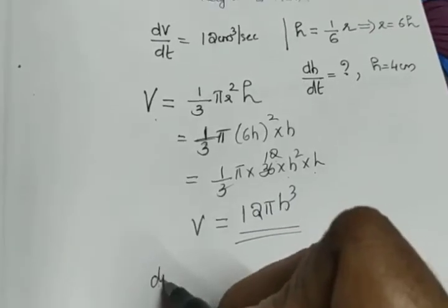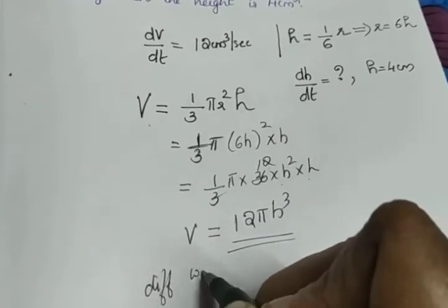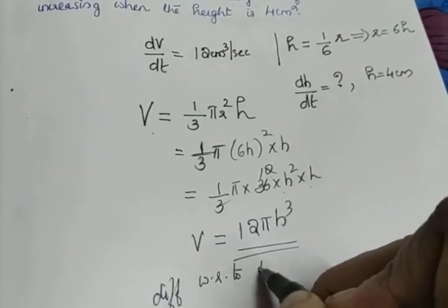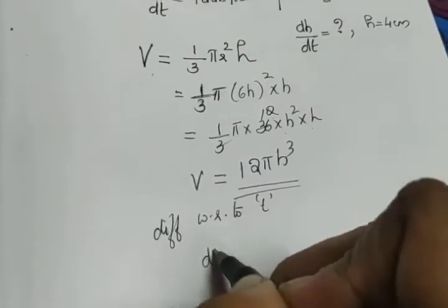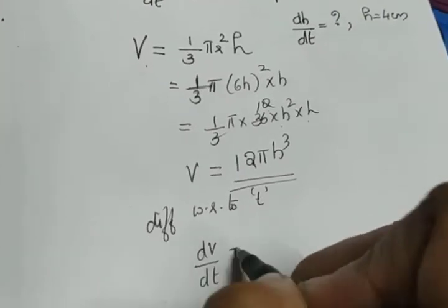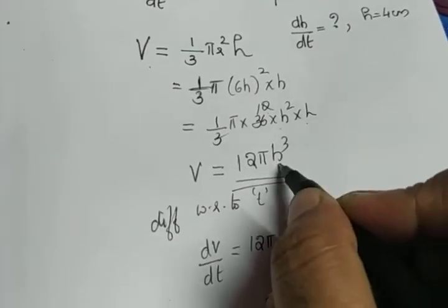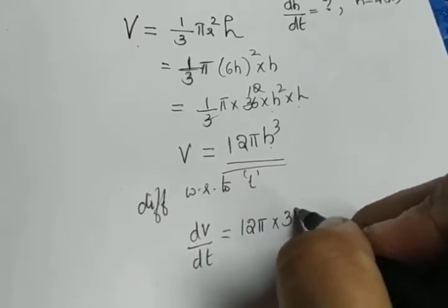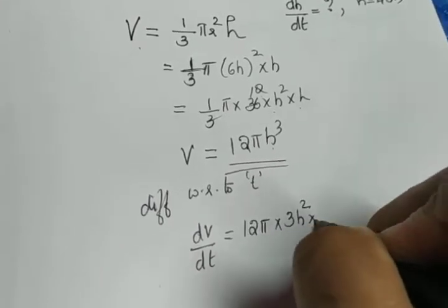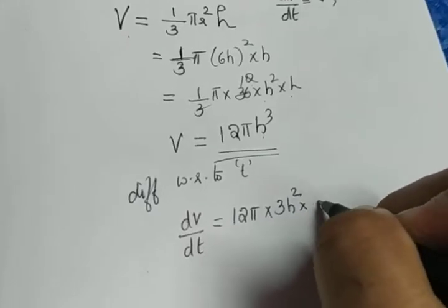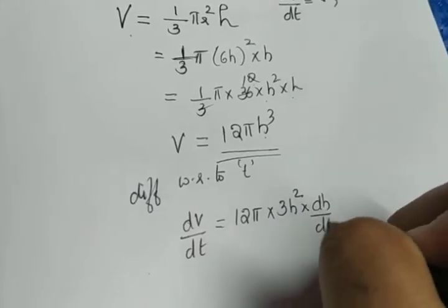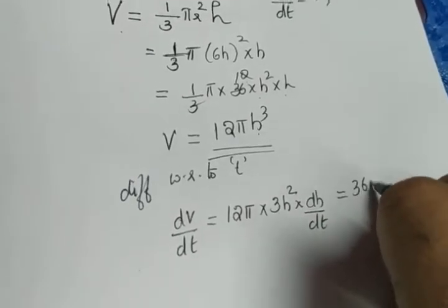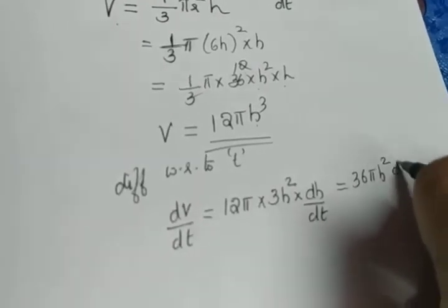Next, we differentiate V = 12πh³ with respect to t, because dV/dt is given and we have to find dh/dt. So dV/dt = 12π · (derivative of h³) · dh/dt. The derivative of h³ is 3h². Therefore dV/dt = 36πh² · dh/dt.